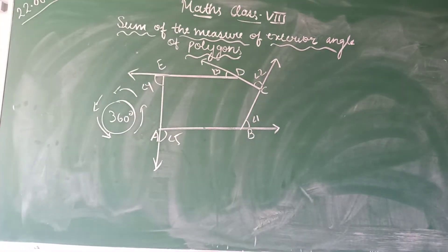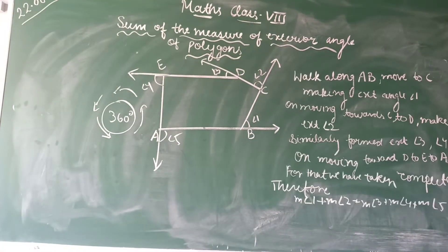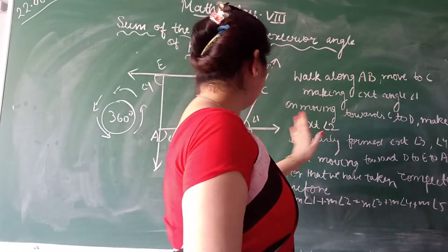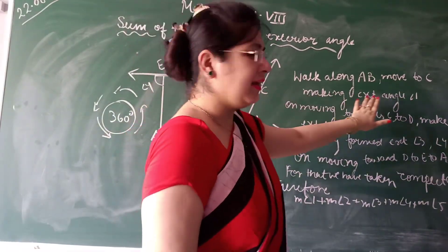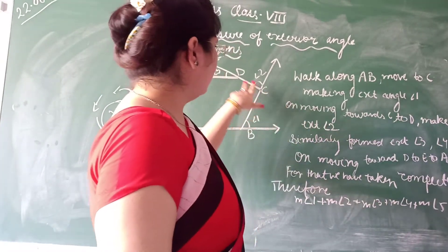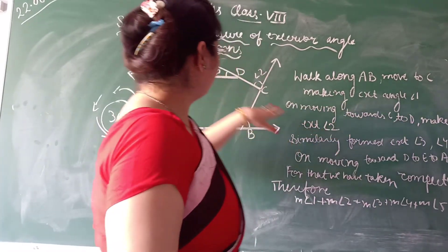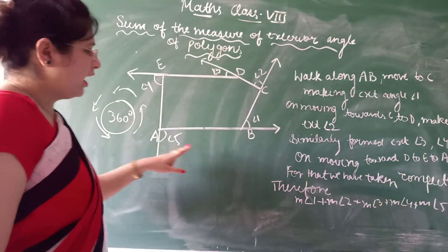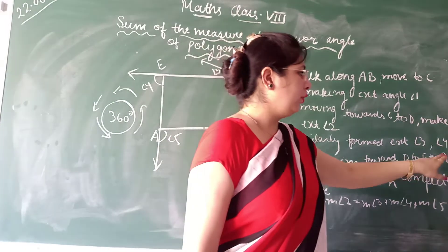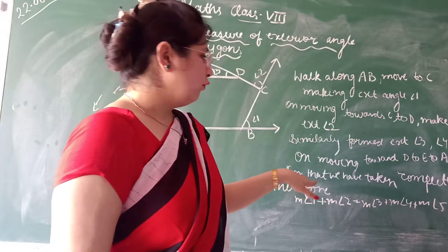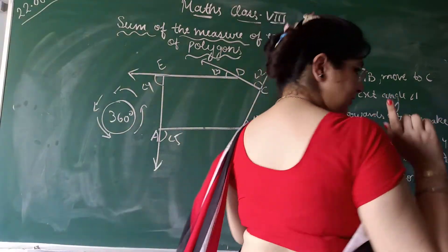Clear? Very easy it was. In this way we will say how to write and prove: we have walked along AB, moved to C from B making exterior angle 1. On moving towards C to D, make exterior angle 2. Similarly formed exterior angle 3, 4 and 5 on moving towards D to E to A and then again to B. For that we have taken complete turn.